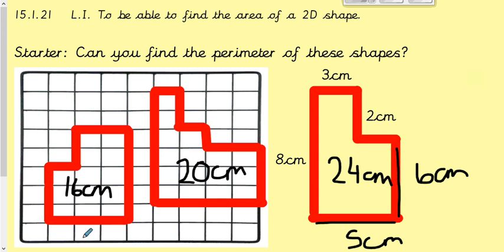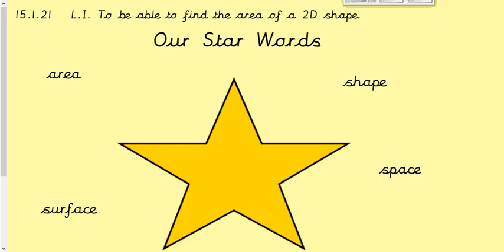Today as I said we're looking at something new called area — the area of a 2D shape. Our star words for today are: area, surface, shape, and space. Surface just means the top layer of something, and we'll go through that in a minute. Shape and space you should already know, so that doesn't need any more explanation.